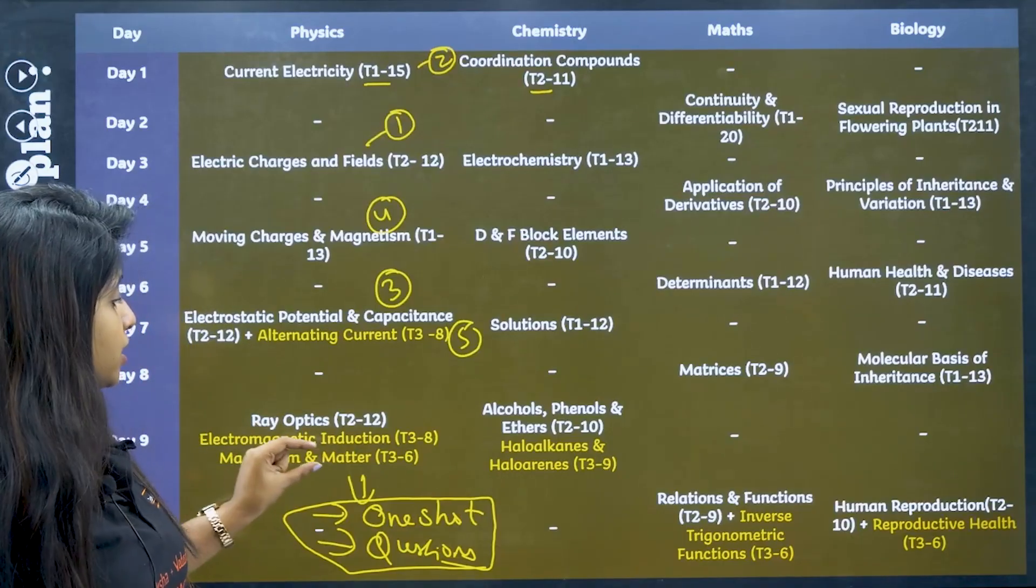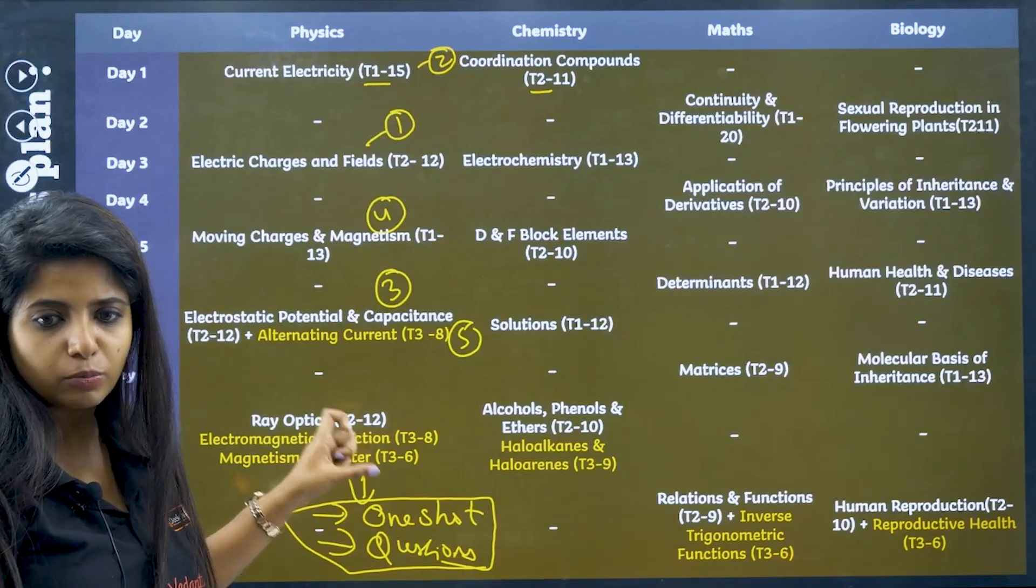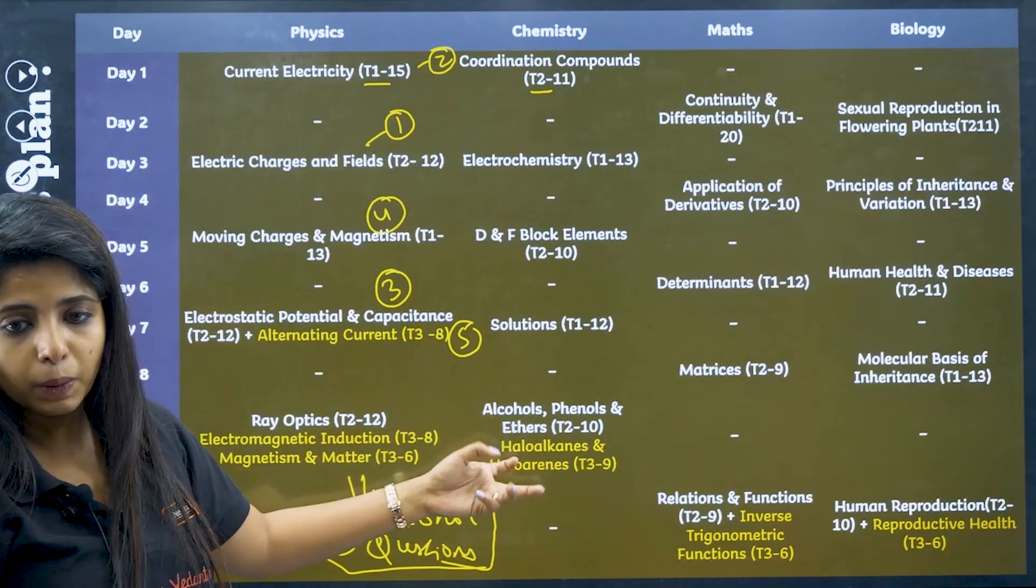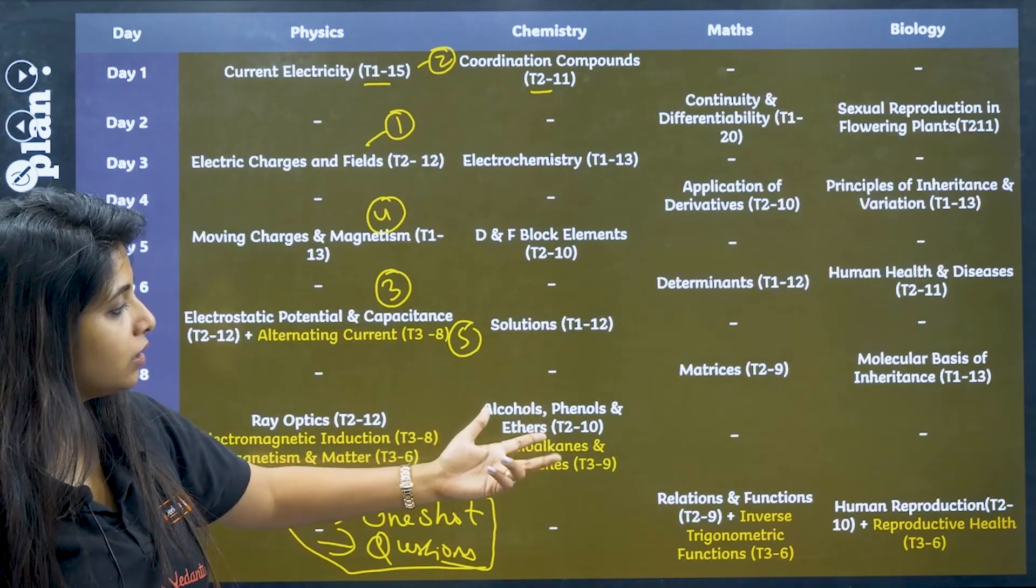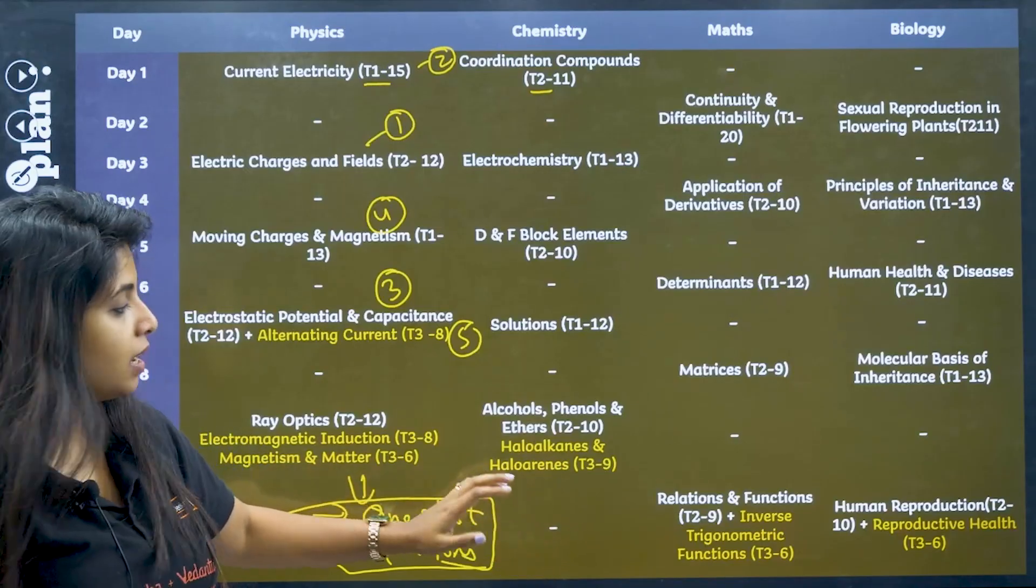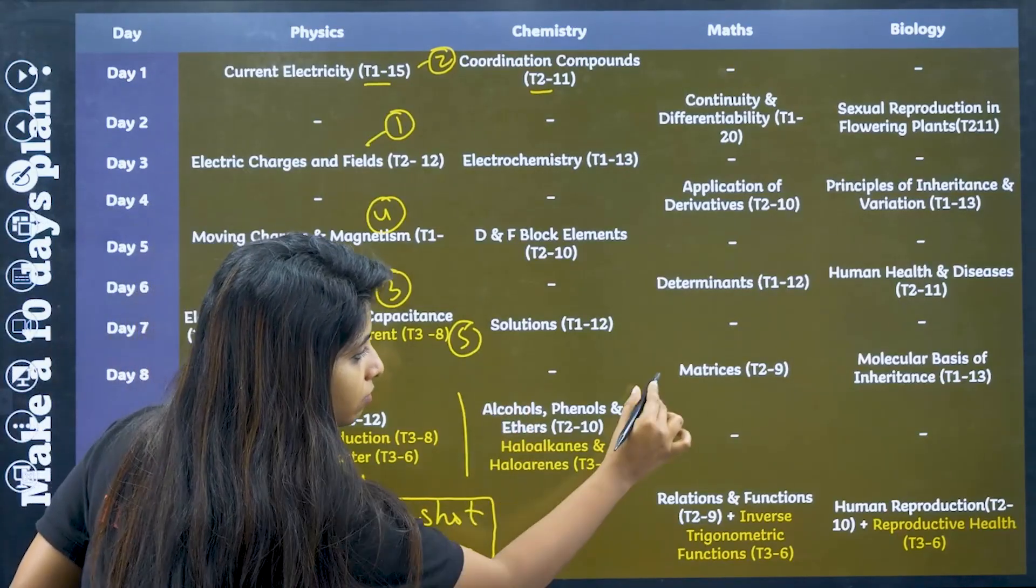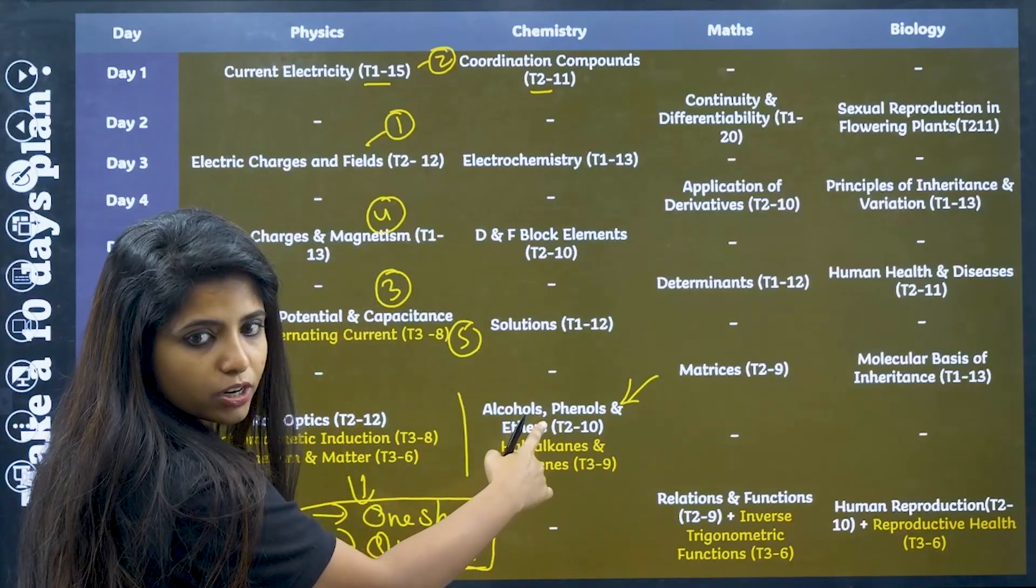So electromagnetic induction and magnetism and matter can be done together. They are small, small chapters. It would be easy for you to cover. Now depending on what's coming in your paper, it can be alcohols and phenols and ethers, or it can be haloalkanes and haloarenes. Then, my dear children, make sure if at all both of them are coming, cover this first because it is a longer chapter.